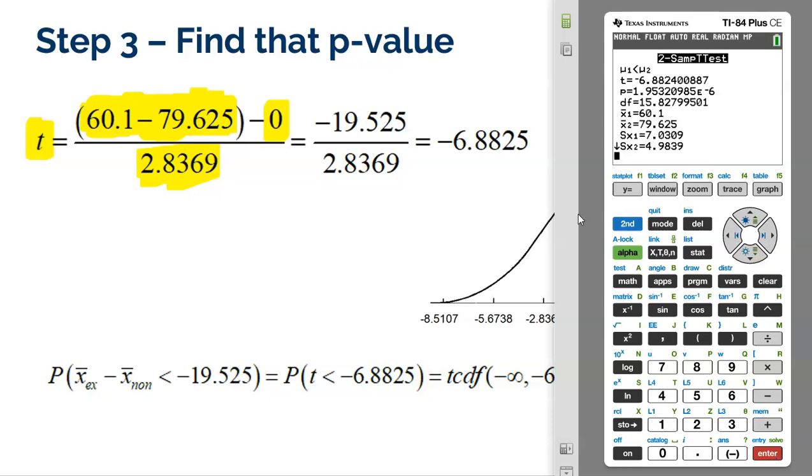There is the t-score that I got, negative 6.8824. And then there is the p-value that we need as well. And make sure you pay attention to that E negative 6 right there. A lot of kids don't pay attention to that. That means we got to move the decimal six times to the left.